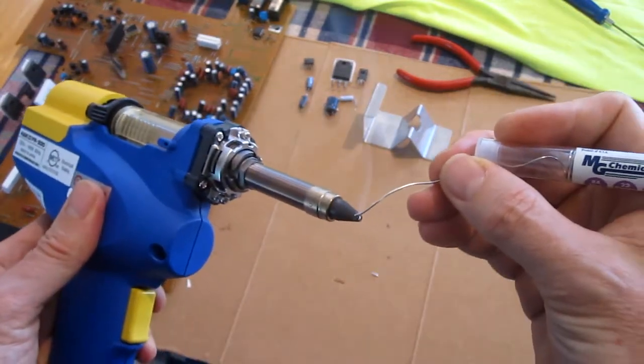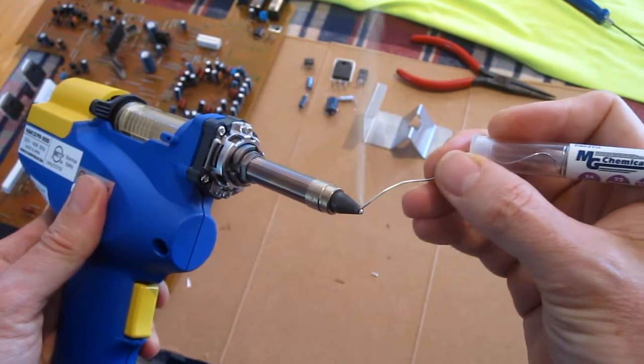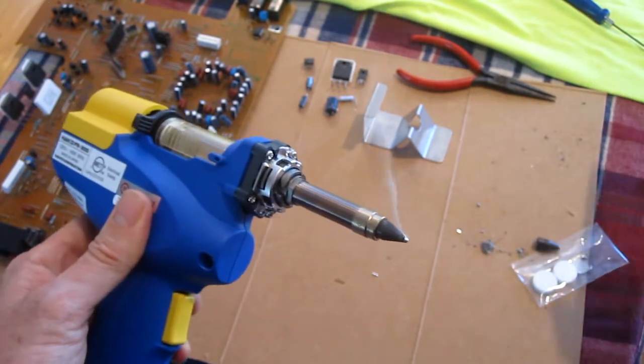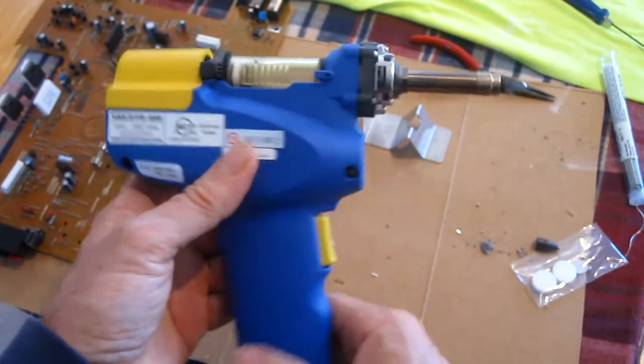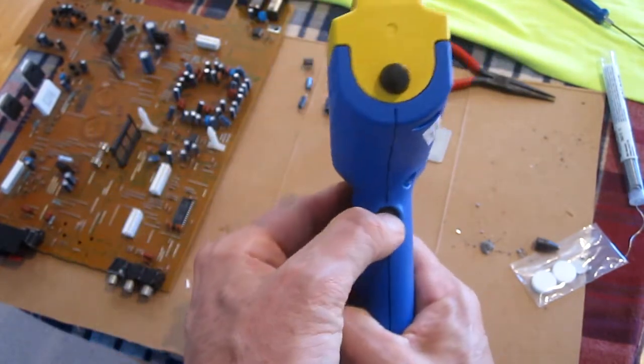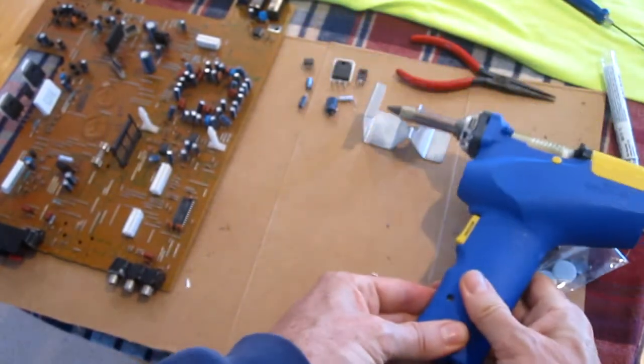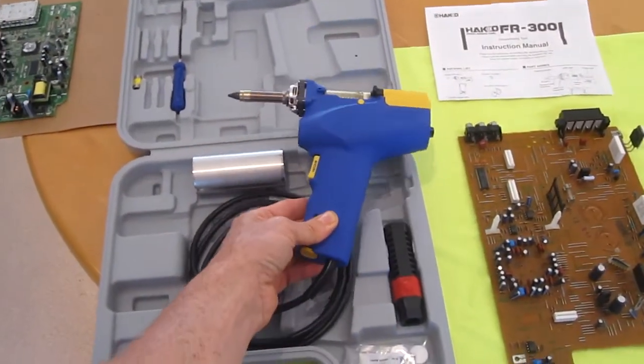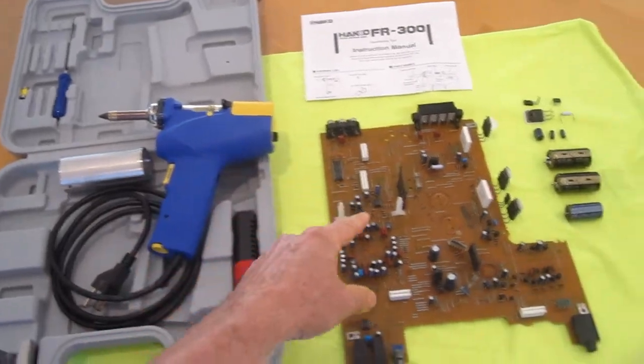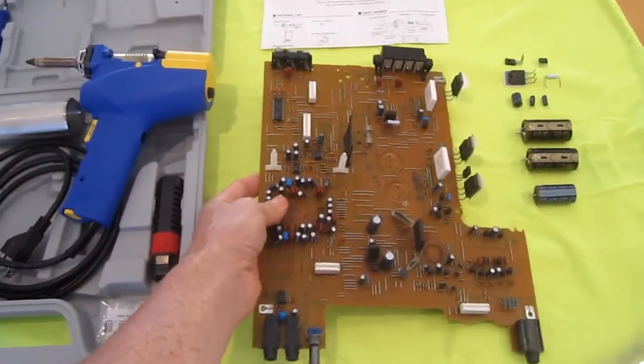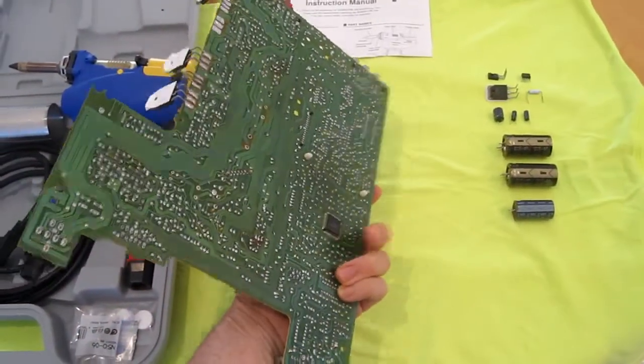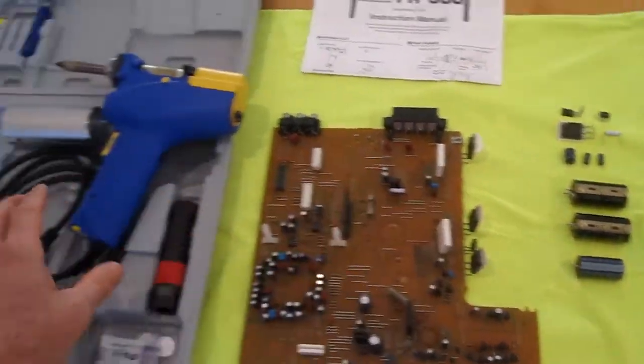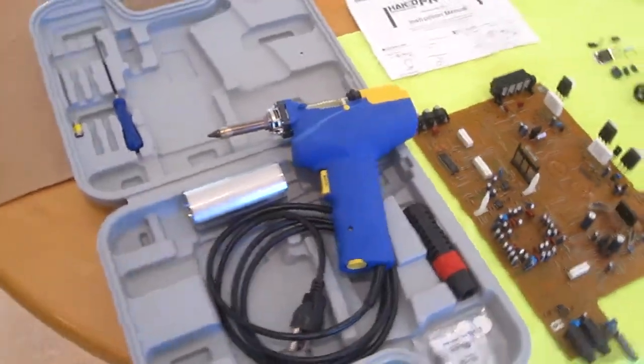Before I put the tool away, I put a little bit of fresh solder on the tip to keep it from oxidizing. And then turn it off. So to wrap it up, I think this is an awesome tool. I would suggest practicing on a junk board so you can learn how it works to pull parts. Thanks for watching.